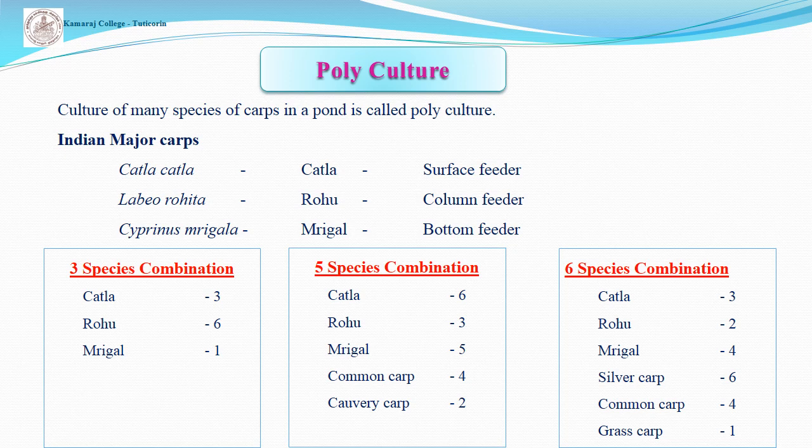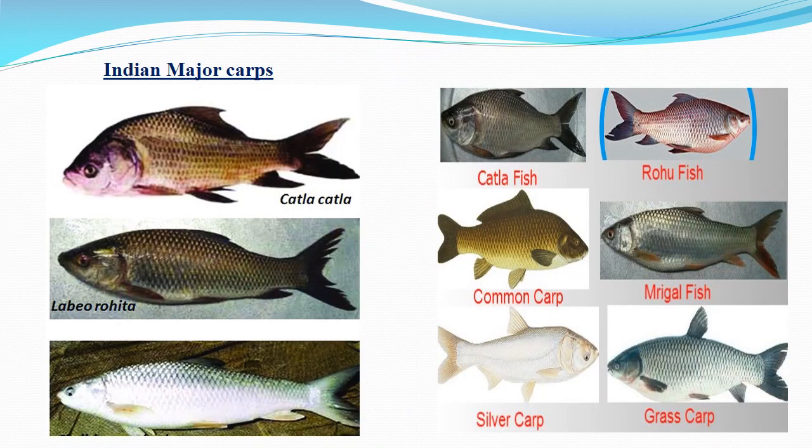Polyculture is practiced in three species combinations: three-species combination (Katla, Rohu, Mrigala in ratio 3:6:1), five-species combination (Katla, Rohu, Mrigala, Common carp, and Cauvery carp in ratio 6:3:5:4:2), and six-species combination (Katla, Rohu, Mrigala, Silver carp, Common carp, and Grass carp in ratio 3:2:4:6:4:1). A picture shows the Indian major carps and all exotic carps.